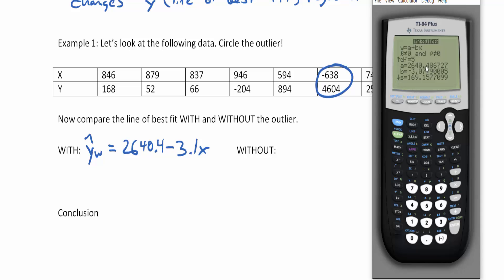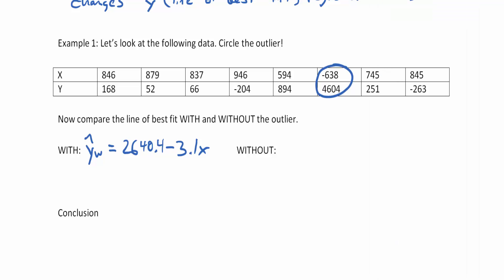And I'm going to check my a and my b value again. 2640.5. So it changed a little bit. And negative 3.1. So if we zoom in on the decimals, you can see that the decimals will change a little bit. But what my without line, by taking out this outlier, my y equals equation didn't change that much. 2640.5 minus 3.1x. So the conclusion is that this outlier at negative 638 comma 4604, is not an influential point. So let's look at our last example.